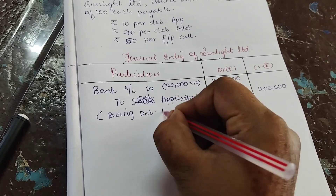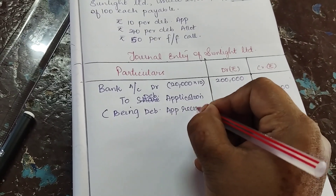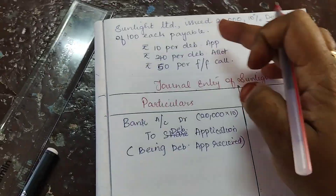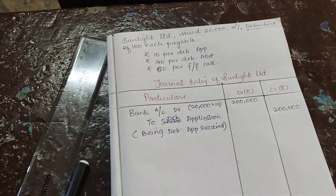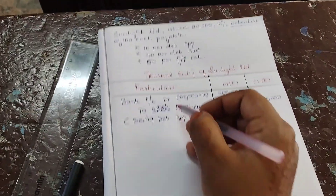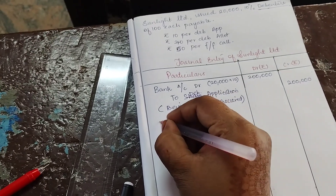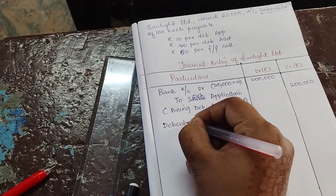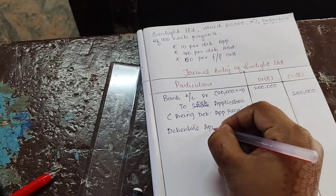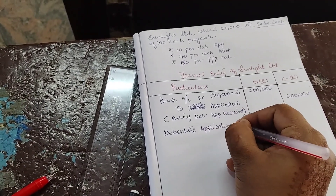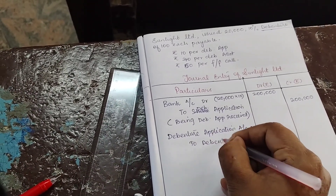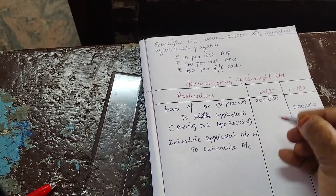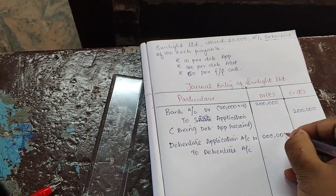Being debenture application money received. Now, this debenture application has to be transferred to the Debenture Account. So the second entry will be: Debenture Application Account Dr. to Debenture Account — the same ₹2 lakh has to be written here.